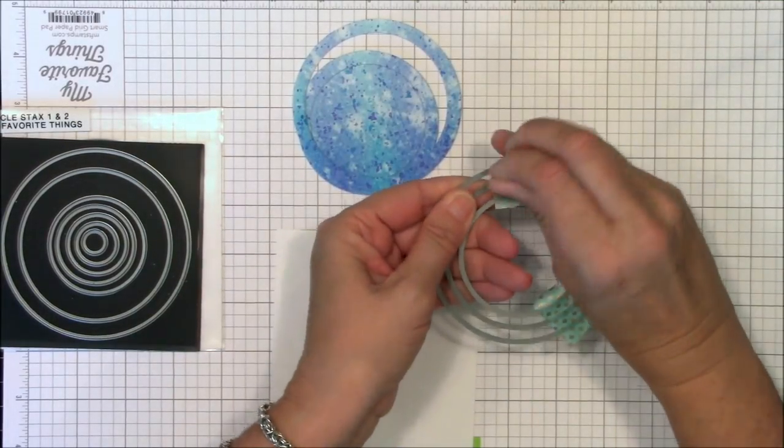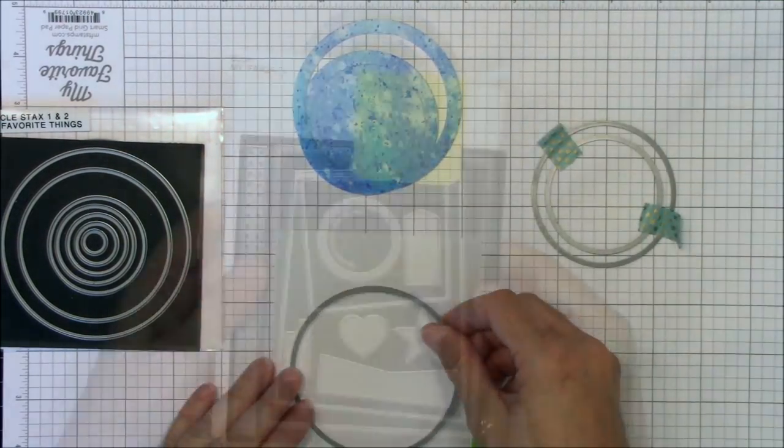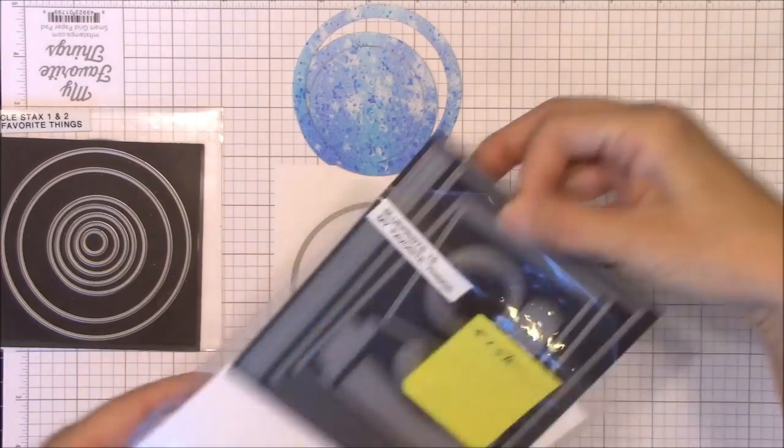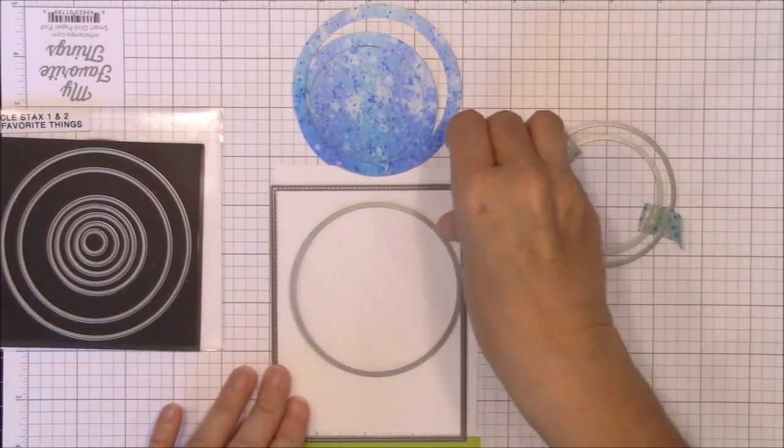Now I'm using that outside circle die and the stitched rectangle from Blueprints 15 to cut a circle from an A2 smooth white panel and finish off the outside edge.